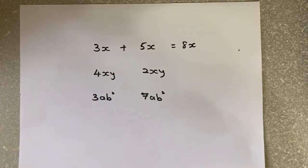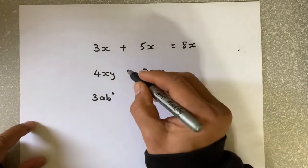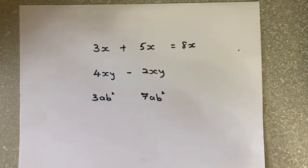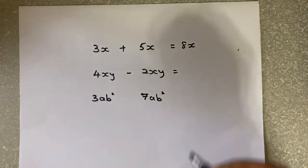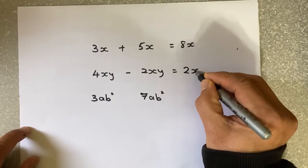Similarly, XY and XY: 4XY and 2XY are also in the same family. If we take away 4XY minus 2XY, that becomes 4 apples take away 2 apples, or 4XY minus 2XY. The answer is 2XY.